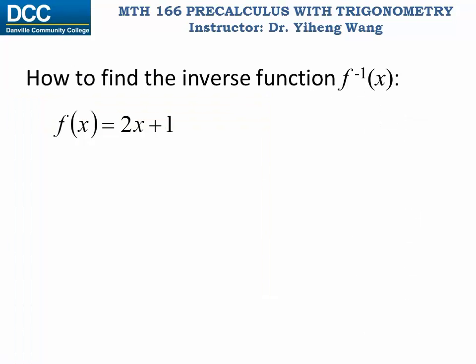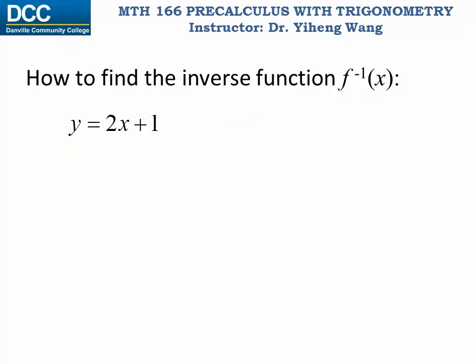Let's use a simple example to derive a four-step strategy to find the inverse function algebraically. For a given original function f(x) = 2x + 1, its inverse function is denoted by f with a power index of negative one. Step one: rewrite f(x) as y, so we have y = 2x + 1. Step two — the most important step — is to exchange the x and y variables. Remember from the puppy example: we get the inverse function by switching the dependent and independent variables.